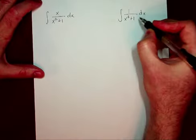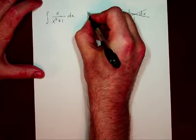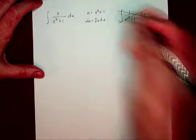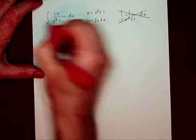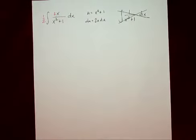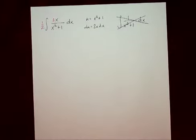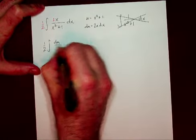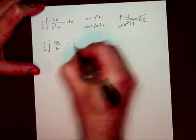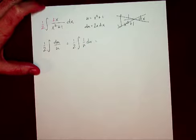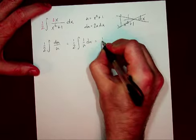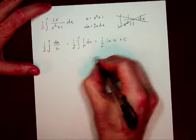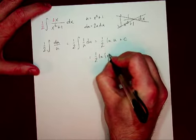So if I'm identifying this as natural log, then my u is the entire denominator. My du is 2x dx. I recognize the fact that all I need to do in order to create my du is multiply that numerator by 2 and then multiply the whole integral by 1 half. That allows me to transform this into du over u, or 1 over u du. In this case, it's going to be 1 half natural log of u plus c, and that winds up being 1 half natural log of x squared plus 1 plus c.